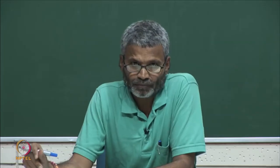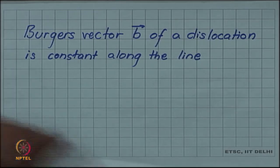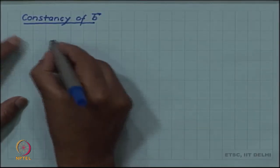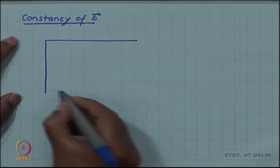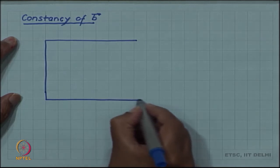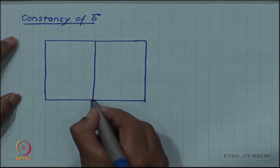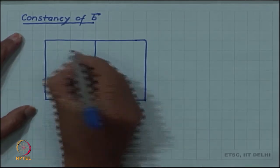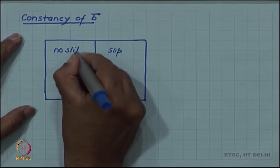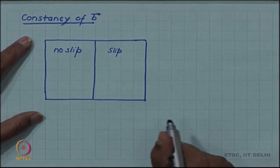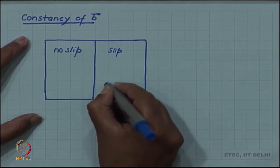An interesting geometrical property of a dislocation line is that the Burgers vector of a dislocation line is constant along the line. This follows from the very definition of the dislocation line as the boundary between slipped and unslipped regions. We define the dislocation line as a line which divides the slip plane into a slip region and a no-slip region, and in the slip region there is a slip of certain magnitude and direction — that is what is called the Burgers vector.